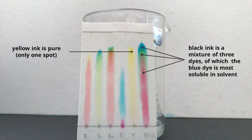The black ink is a mixture of three different dyes, of which the blue dye is the most soluble in the solvent as it has traveled the furthest.